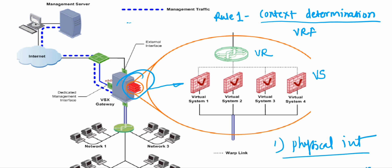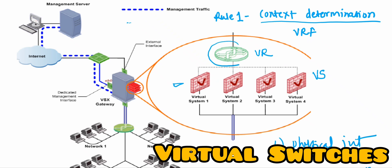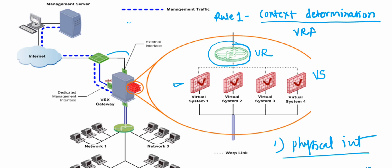Whenever a packet arrives from the outside world, it goes on the dedicated link to the VSX gateway, which then forwards traffic to the virtual systems based on configuration. Now consider the scenario where you have a virtual router in place — when the packet comes from the outside world to the VSX gateway, depending on context determination, it sends the packet to the virtual router, which then sends it to the appropriate virtual system based on source IP, destination IP, source port, destination port, and protocol.